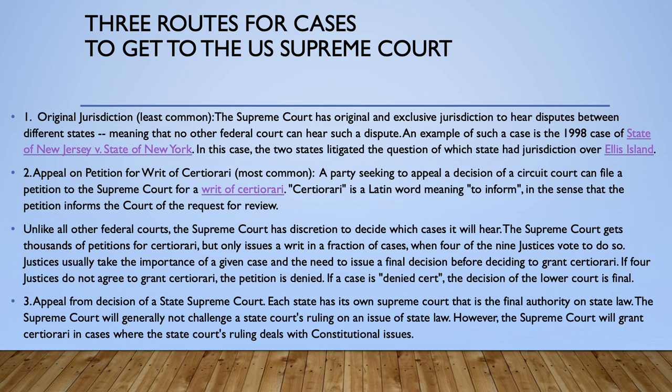The last way of getting to the Supreme Court is an appeal from a decision of a state Supreme Court, which is probably in between the other two in terms of commonness — they take several of these a year. Each state has its own Supreme Court that is the final authority on state law. The U.S. Supreme Court generally won't challenge a state court ruling on issues of state law, unless the question is whether the state law violates the U.S. Constitution.